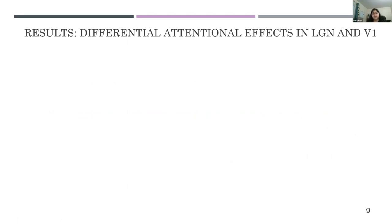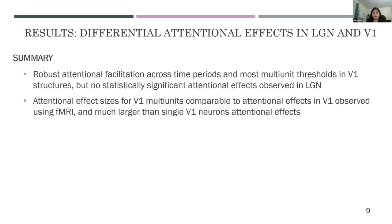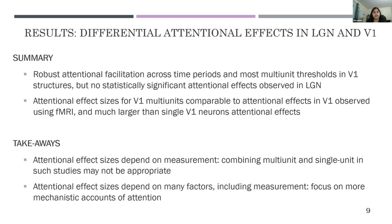In conclusion, we find differential attentional effects in LGN and V1 that are consistent across multi-unit thresholds and time periods. We see attentional facilitation in V1 that is much larger than single-unit effect sizes and more comparable to fMRI effect sizes. This demonstrates that effect sizes depend heavily on what measurement is used and are not necessarily illustrative of how a region is involved in attention. The main cautionary tale is that attentional effect sizes do depend on measurement, many studies combine multi-unit and single-unit recordings inappropriately, and lack of effect size does not indicate lack of regional involvement in attention. We must focus on more mechanistic accounts and move beyond simply reporting mean effect sizes.